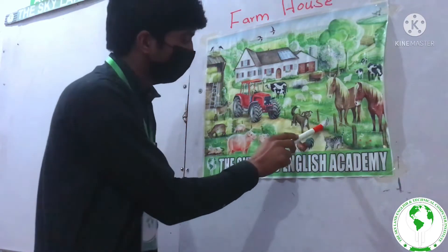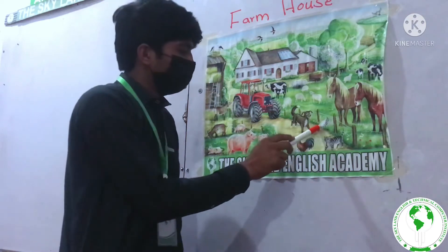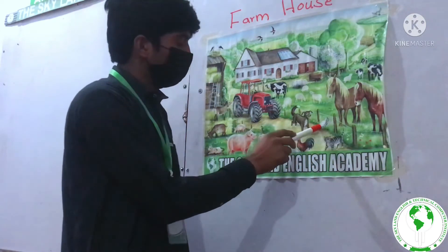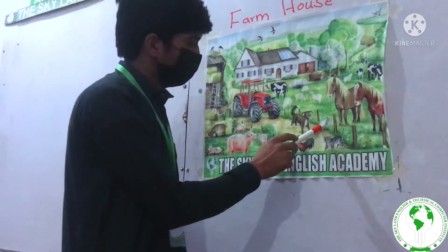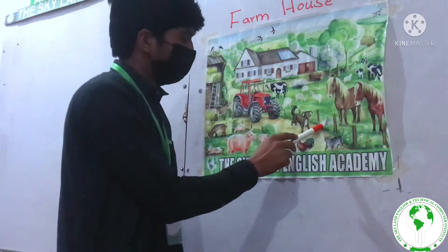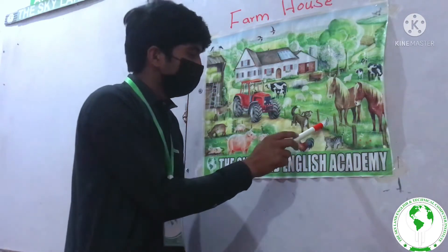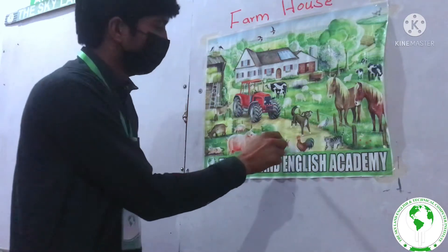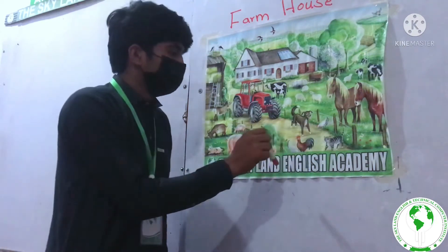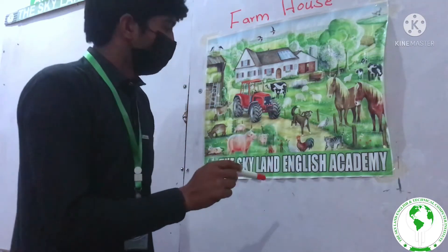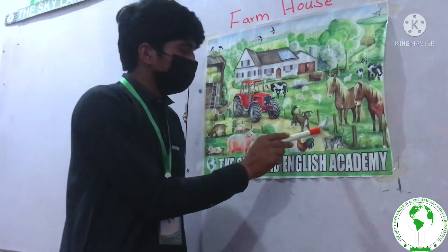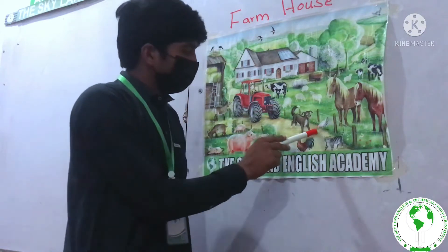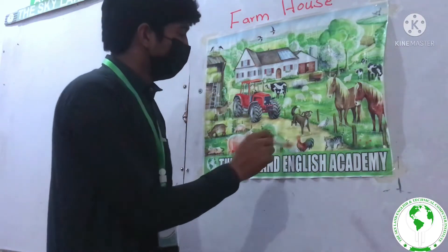This is a hen, and the hen is of multiple colors — like white color, black color, and red color. This hen is eating the wheat.